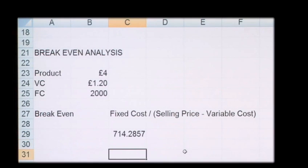Which gives you 714.3. Now obviously we don't produce 714.3 units, so you round this up and your break-even point is 715 units to break-even.